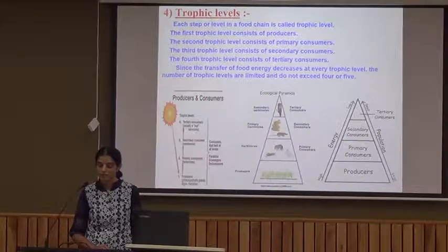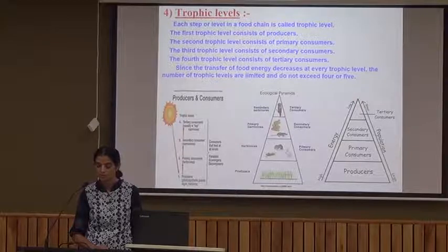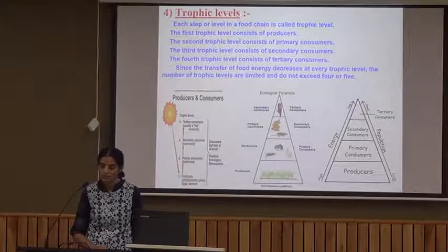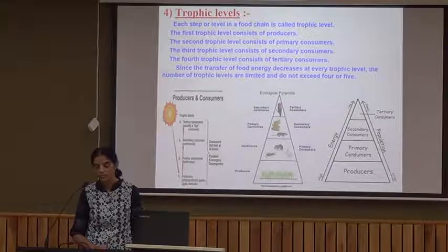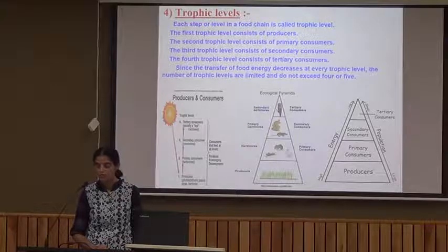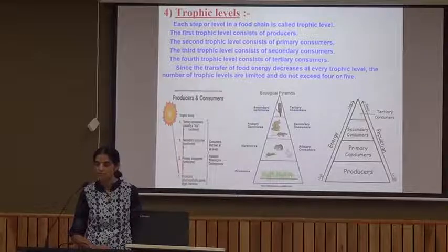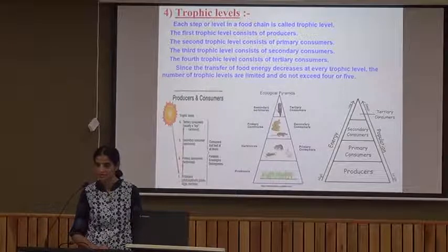Each step or level in a food chain is called a trophic level. The first trophic level includes producers, the second trophic level includes primary consumers, the third trophic level includes secondary consumers, and the fourth trophic level includes tertiary consumers. Since the transfer of food energy decreases at every trophic level, the number of trophic levels is limited to four or five.